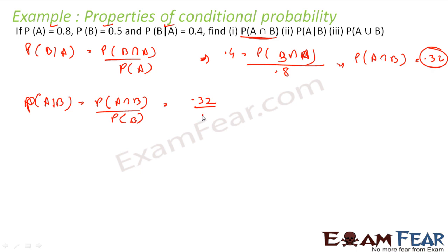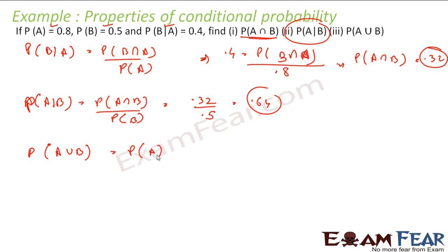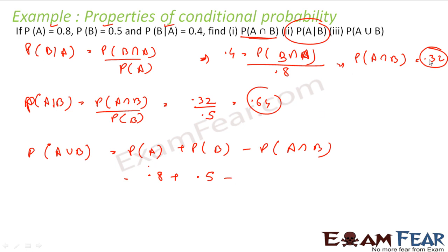Probability of B is 0.5. So probability of A given B is 0.32 divided by 0.5, which is 0.64. Now I have to find probability of A union B. That is nothing but probability of A plus probability of B minus probability of A intersection B. Probability of A is 0.8, probability of B is 0.5, probability of A intersection B is 0.32 — if you solve this you get 0.98.